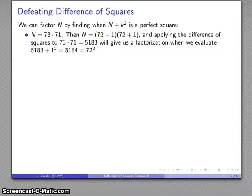5183, is going to give us a factorization when we evaluate 5183 plus 1 squared, which will equal a perfect square. And there's our difference of perfect squares, 72 squared minus 1 squared, which gives us the factorization. And that is an easy problem to solve.